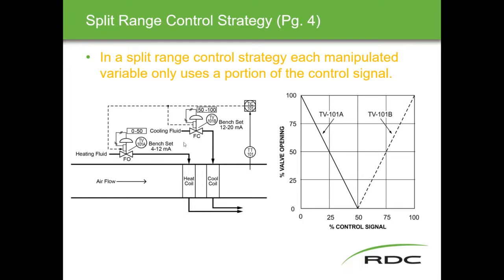It's like a building heat-type arrangement. The heating fluid valve operates from 4 to 12 milliamps (0–50%) and the cooling medium valve operates from 12 to 20 milliamps (50–100%), doing opposite things. The 4–20 mA range is split, and each valve only uses a portion of it.